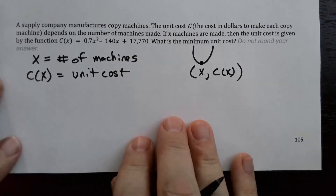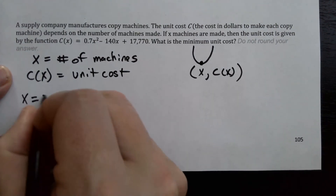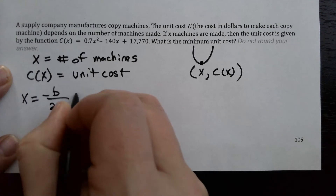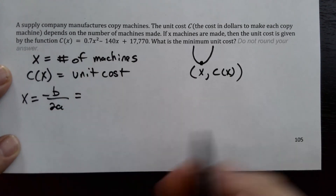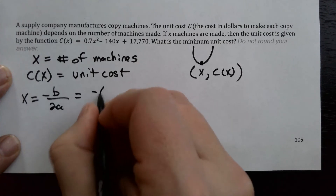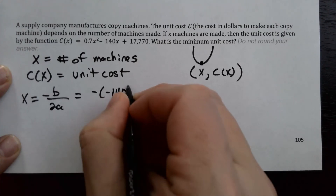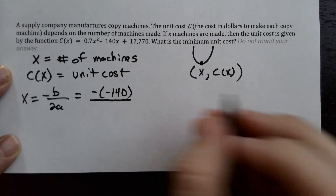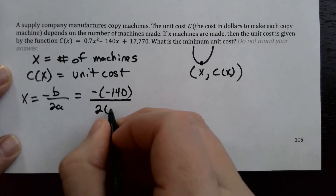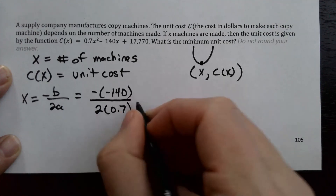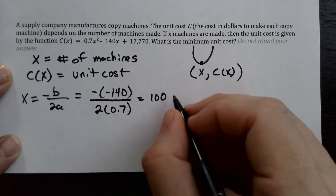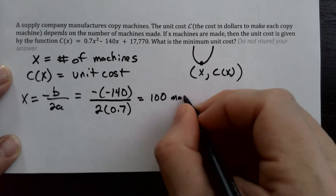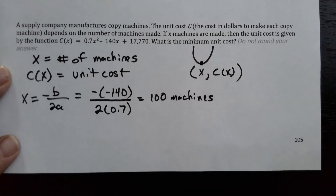Just like before, X equals negative B over 2A. Here A is 0.7 and B is negative 140, so we get negative of negative 140 divided by 2 times 0.7, which gives us 100. So it takes 100 machines to achieve the minimum unit cost.